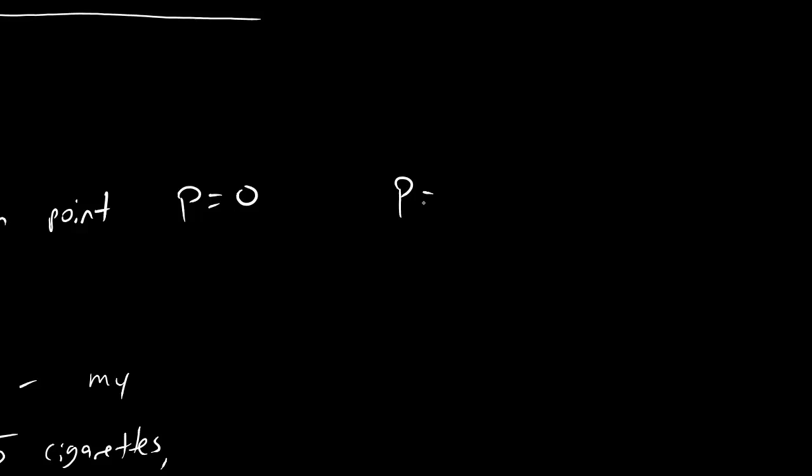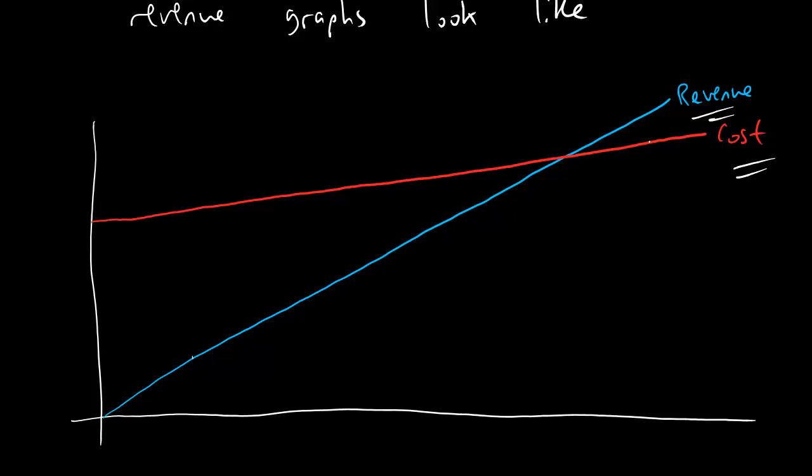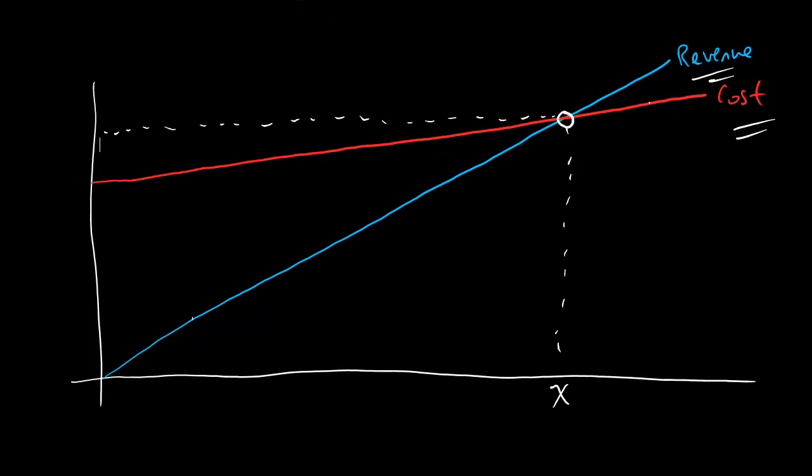So, for example, part A says find the break-even point on the graph. Break-even is where profit equals zero, but we don't have a profit graph here. All we have is revenue and cost. So what we've got to remember is that profit equals revenue minus cost. And if profit equals zero, that really just means revenue minus cost equals zero. And that means the same thing as revenue equals cost. If revenue minus cost equals zero, that only happens when revenue and cost are equal. And so if we're trying to find the break-even point, then since we don't have a graph of profit, all we have is revenue and cost, what we're looking for is where the revenue function and the cost function give the same value. And check it out, that's not hard at all, that's just that fancy-schmancy point where they cross.